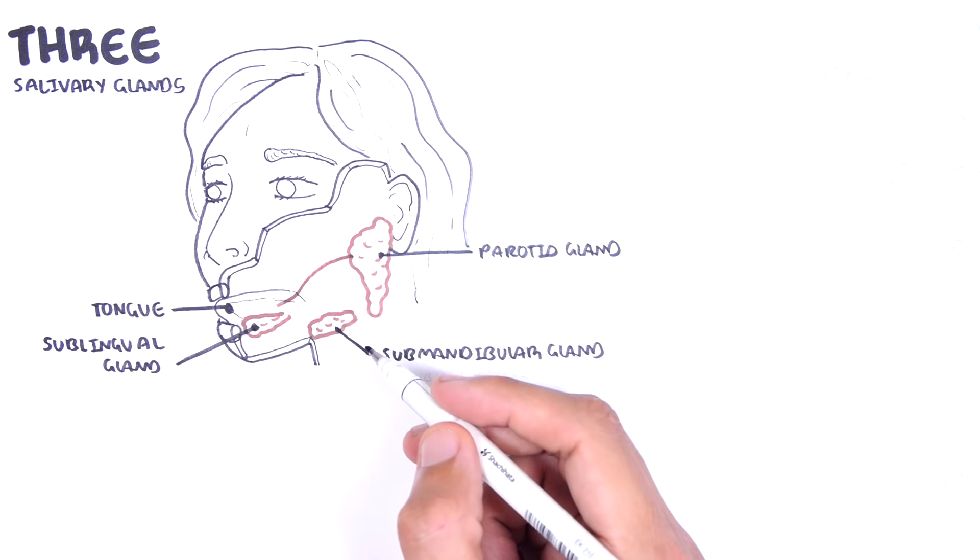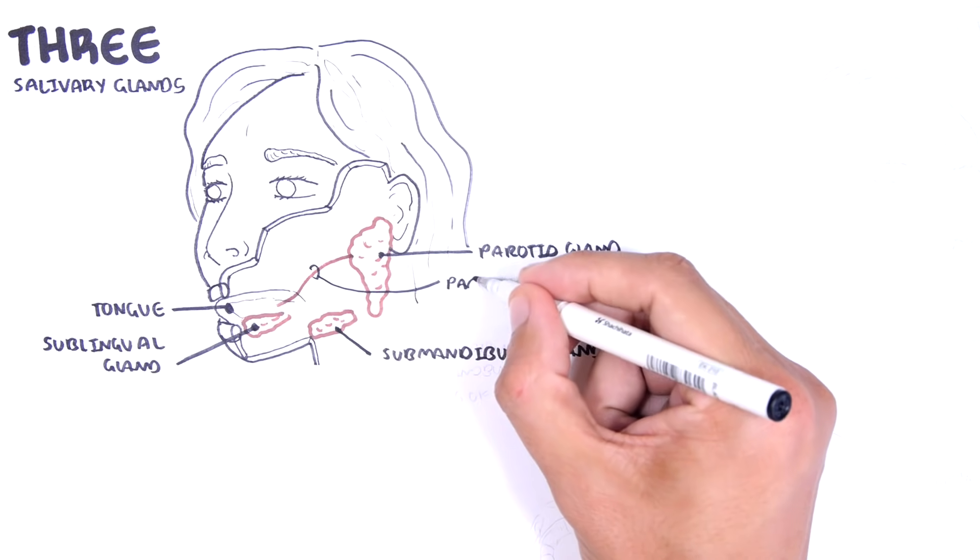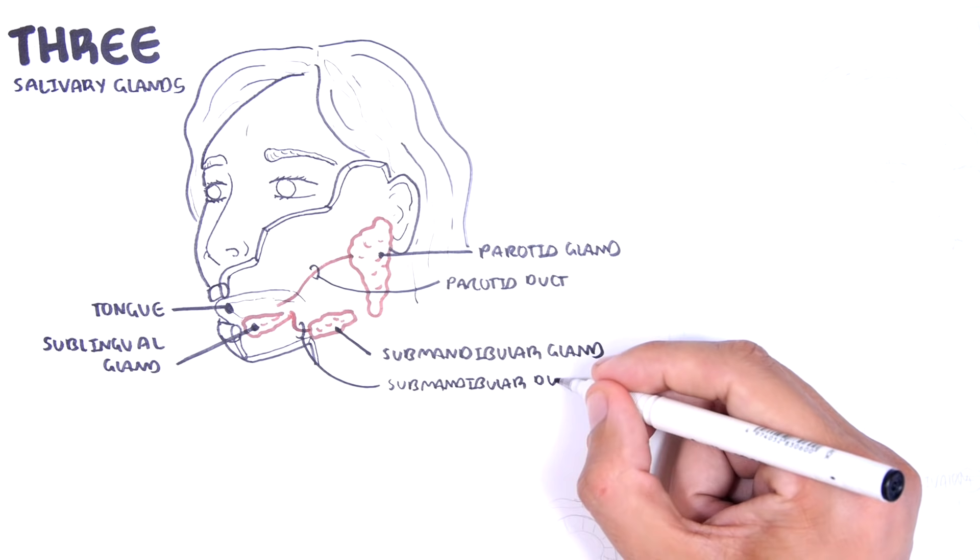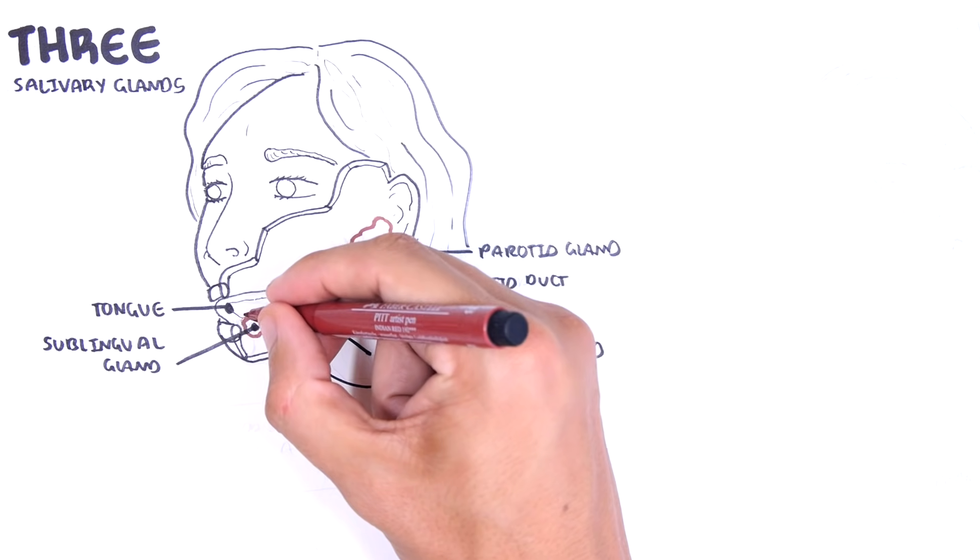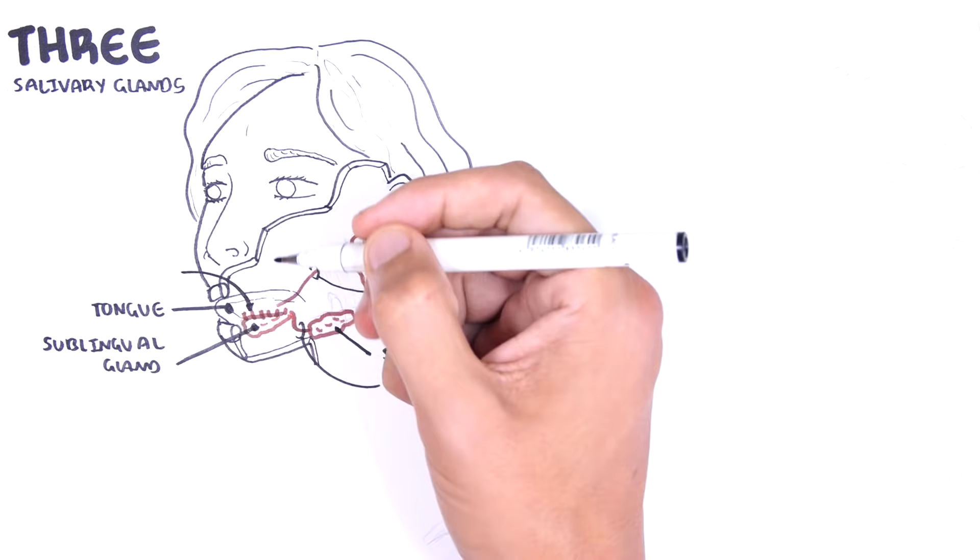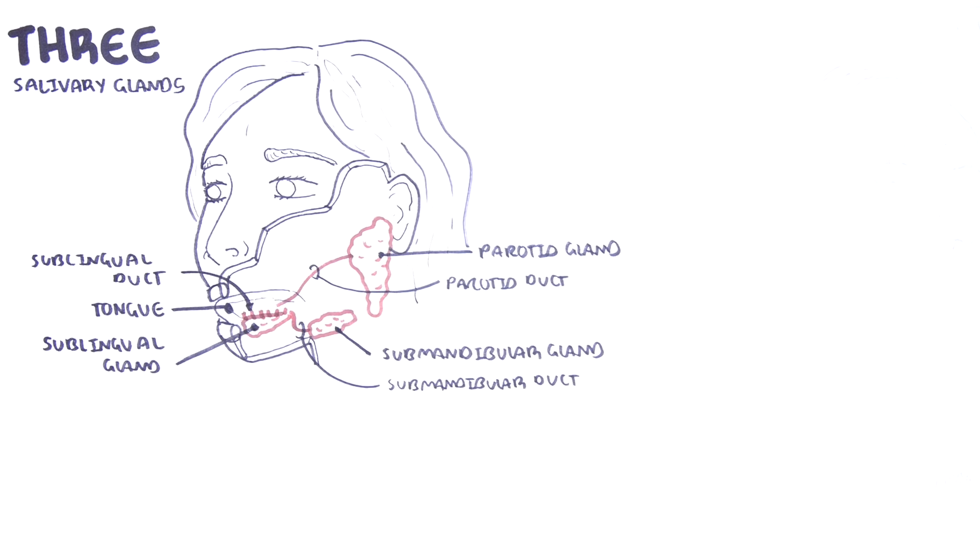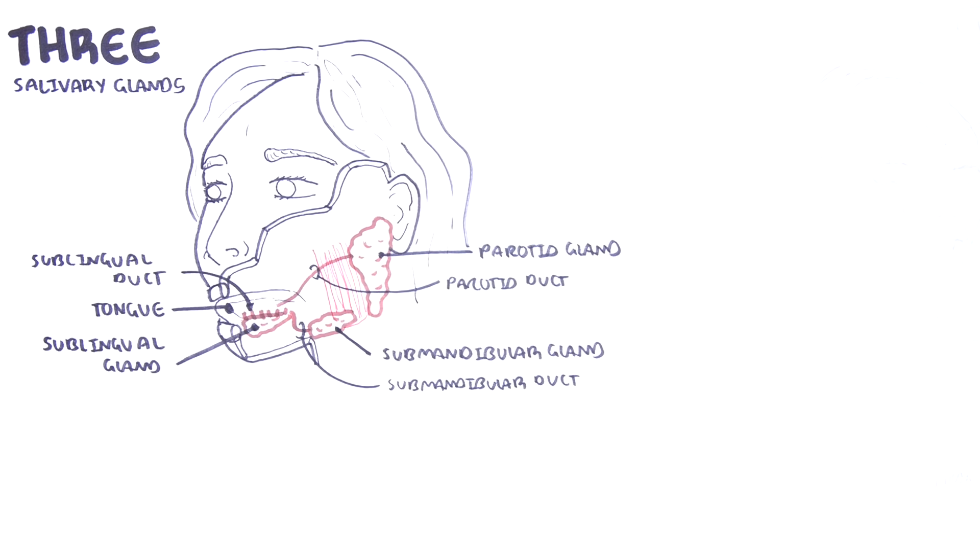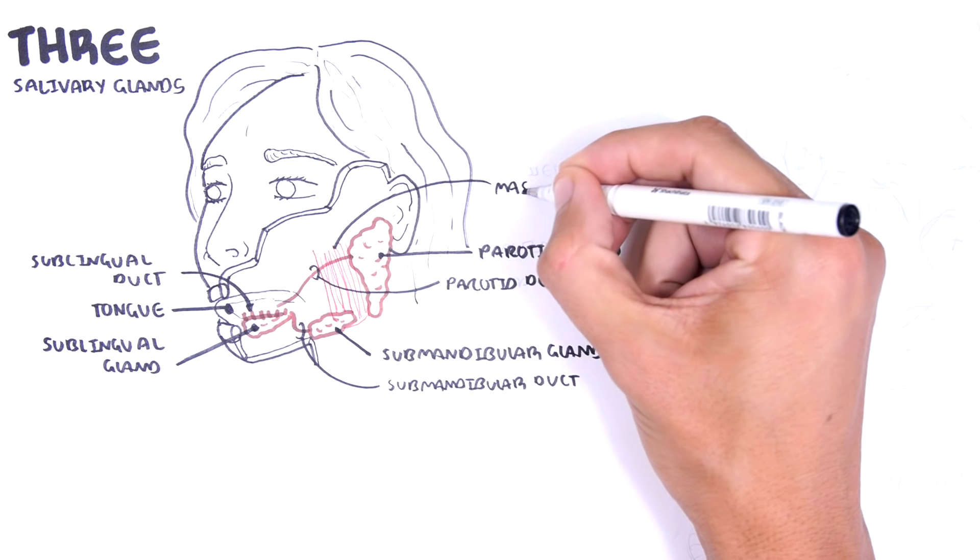Each salivary gland has ducts which drain into the oral cavity, the mouth. The parotid duct, the submandibular duct, and the sublingual ducts drain into the oral cavity. Here is the masseter muscle which sits anterior to the parotid gland.